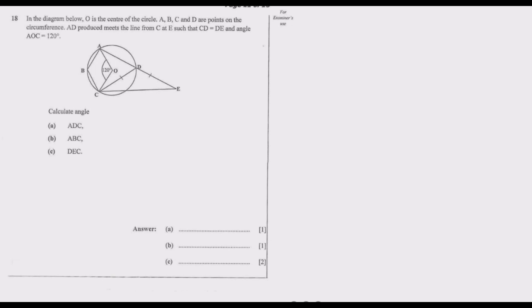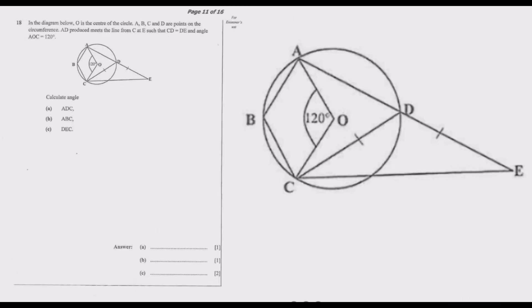Calculate angle: (a) ADC, (b) ABC, (c) DEC. So for you to follow along with me, let me just try to zoom in so that we're able to see what I will be doing. From the information that we've been given, what can we find? The first thing that we notice is we've been given the angle at the center, so we need to find the angle at the circumference.